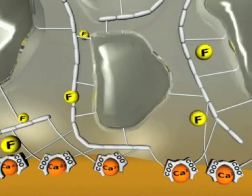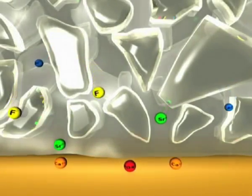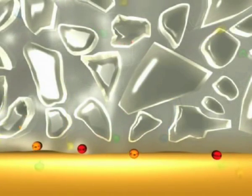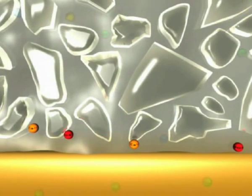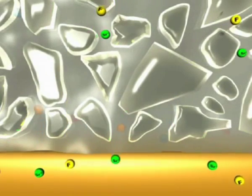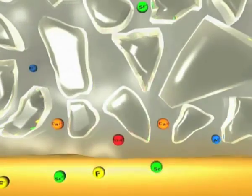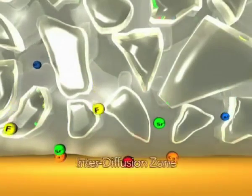In addition to chemical adhesion to calcium in the tooth, a fusion bonding process takes place as well. Calcium and phosphate ions from the polyacid-treated dentin and enamel and strontium and fluoride ions from the unset glass ionomer intermix and precipitate, forming an interface called the interdiffusion zone.